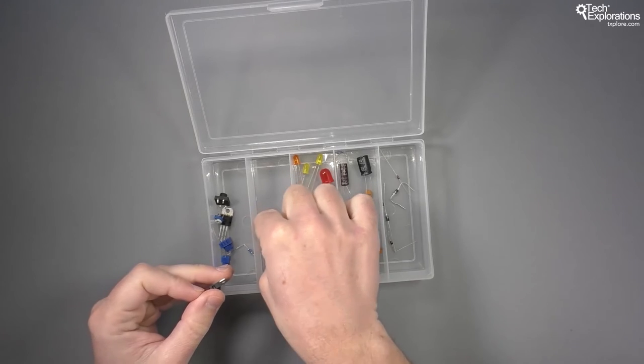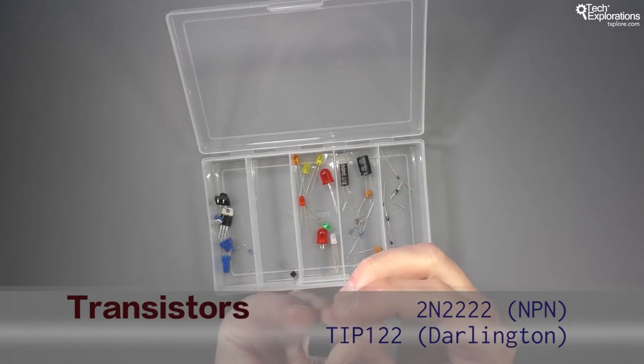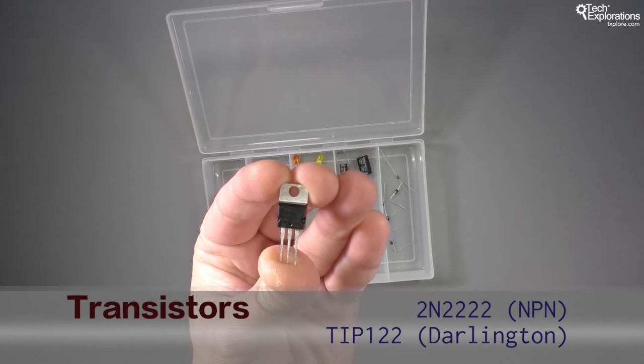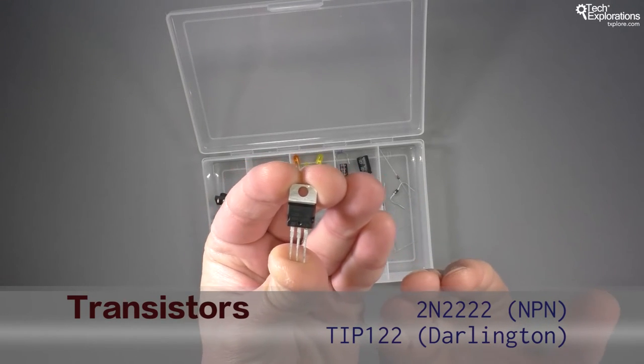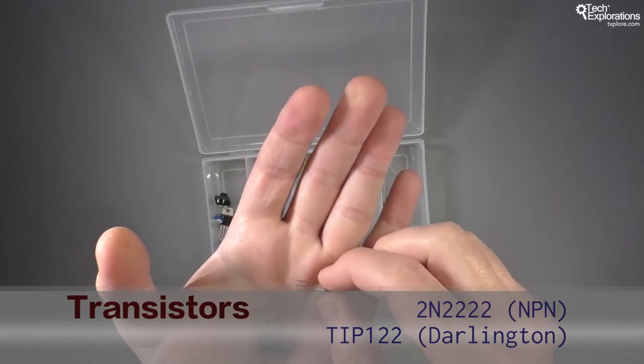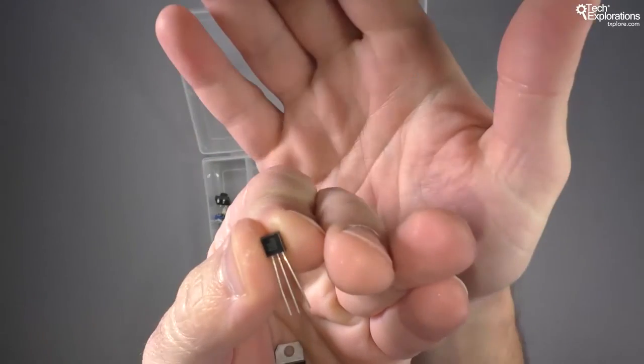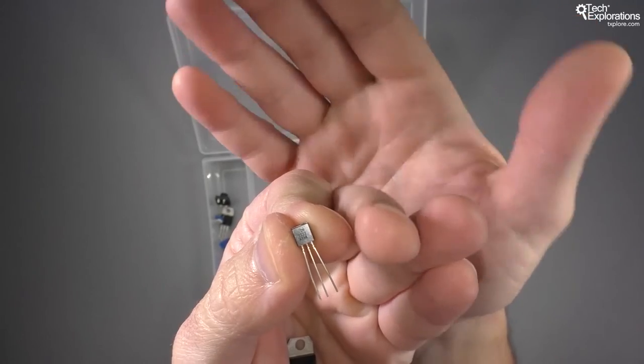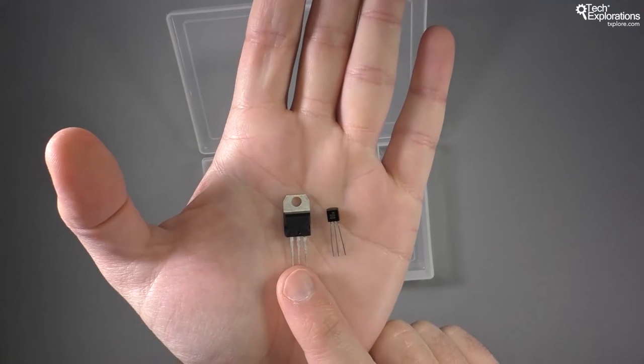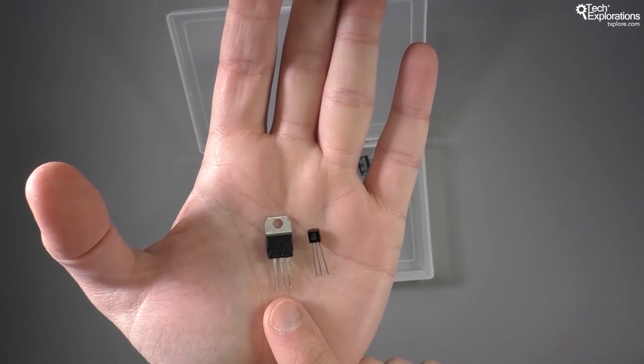Next we are going to need transistors. Here's a couple of examples. This one here is a Darlington transistor, it's a TIP122. It's a transistor that allows us to provide a bit more power in whichever circuit that we are driving, as opposed to a more general purpose transistor like this 2N2222 transistor. I would recommend that you have at least one of each, so have one TIP122 or 121, the difference is in the ratings.